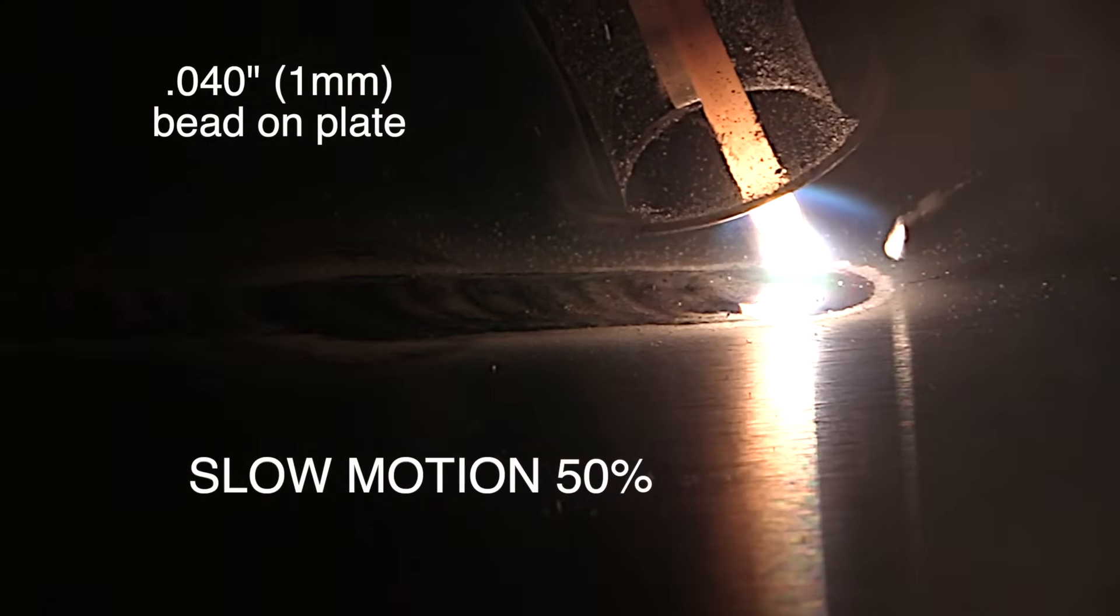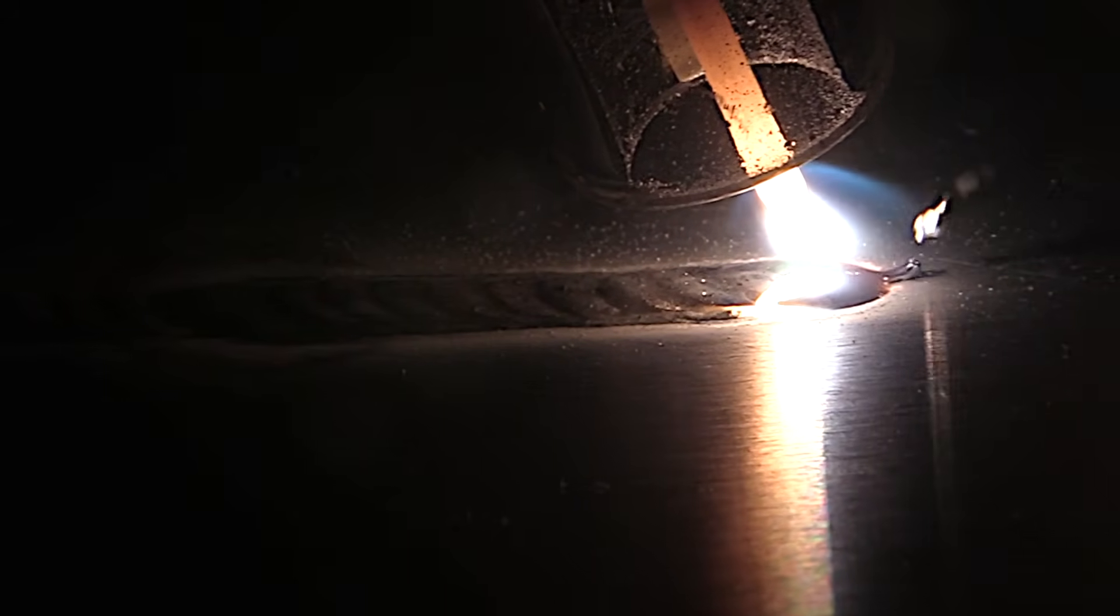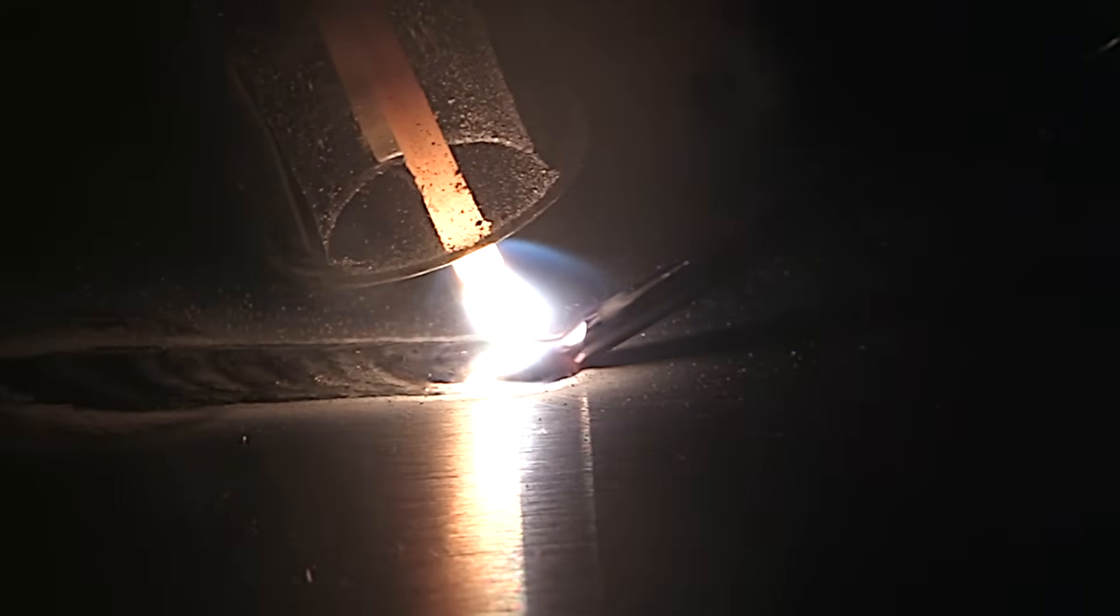This is some thinner metal, and sometimes it can be a little bit subtle in how that puddle sinks or drops. You really have to watch it. This is 040, and it is sinking in between dabs. Again, this is half speed, so I'm not welding this slow. Now let's go ahead and take a look at it at normal speed.